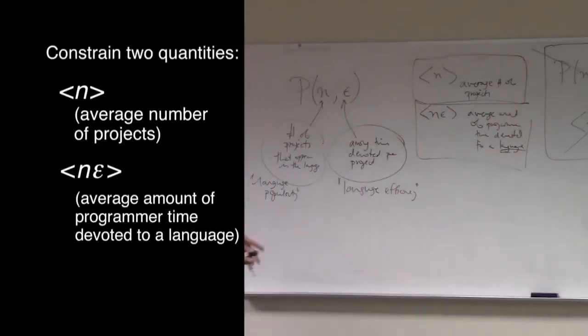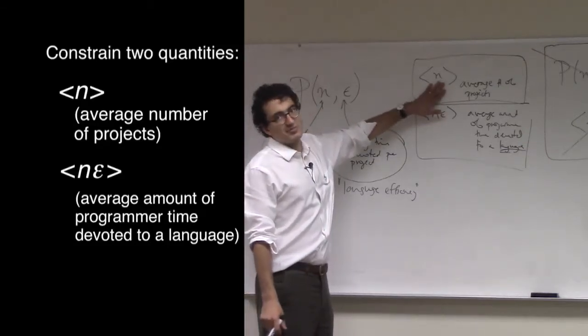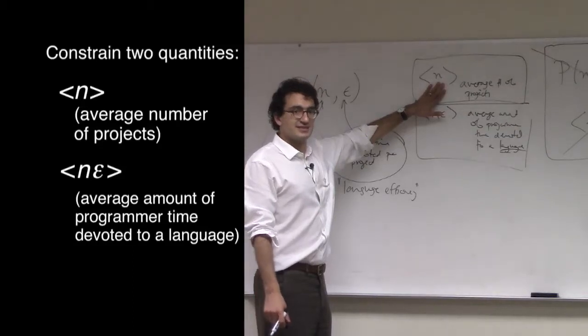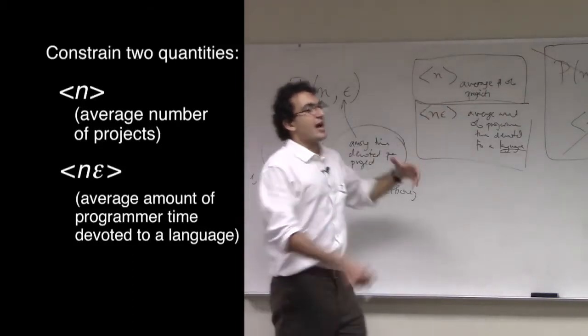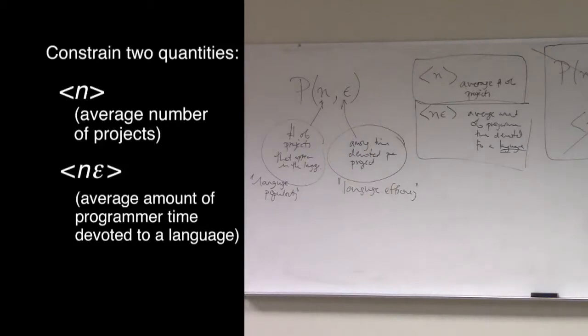And we're also going to constrain the average amount of programmer time devoted to a language. The idea is that there's some intrinsic force that keeps the average number of projects per language constant. There's some large-scale social factors, or set of social factors, that keeps the average number of projects constant and also constrains the average number of programmer time devoted to a particular language.